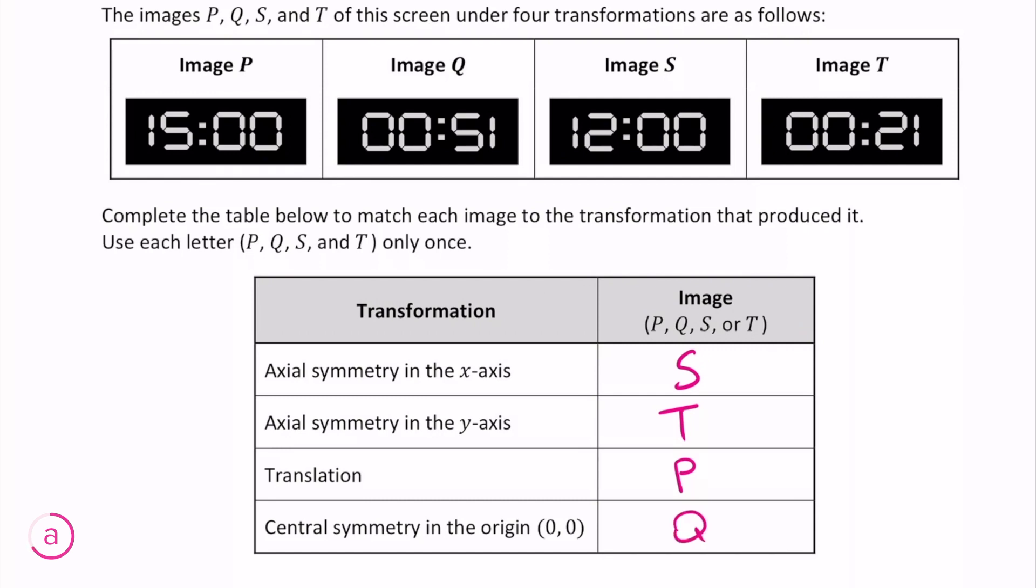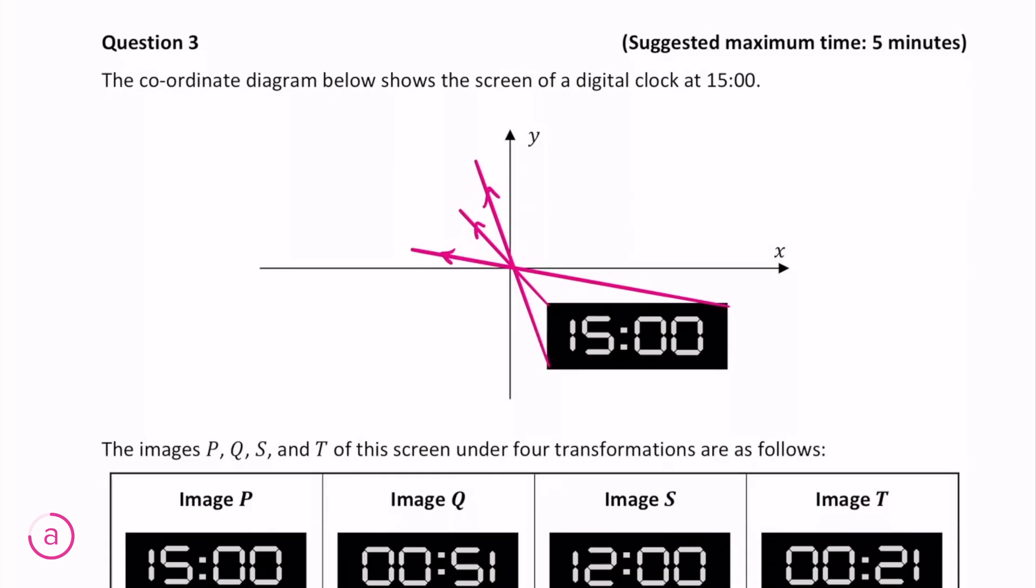By process of elimination we already know that the last one is image Q, but this transformation is central symmetry in the origin. This transformation would involve passing each point through the origin and projecting them an equal distance on the other side. This would cause the image to be flipped both horizontally and vertically.